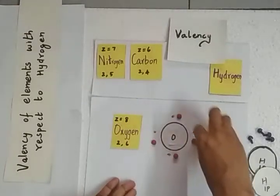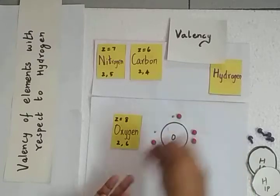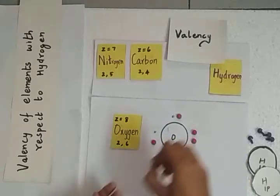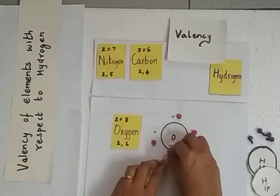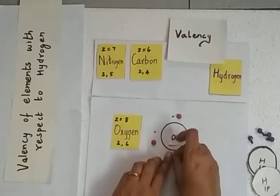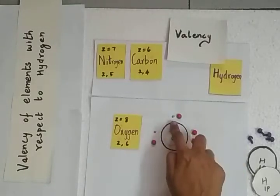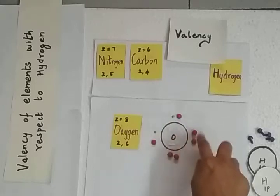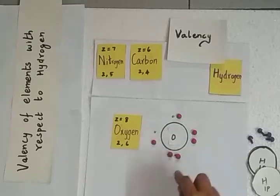First you fill 4 electrons around the symbol, then start pairing to reach 5 and 6. We are finished filling the valence electrons for the oxygen atom. Oxygen has 6 electrons and needs 2 more to complete its octet configuration — that is 8 electrons — for stability.